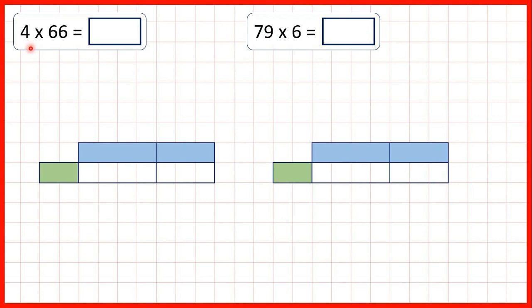Now let's multiply a single-digit number and a two-digit number using the grid method. First, we have 4 times 66. What we need to do is partition our two-digit number into tens and ones. So this 6 stands for 60 and this 6 stands for 6.